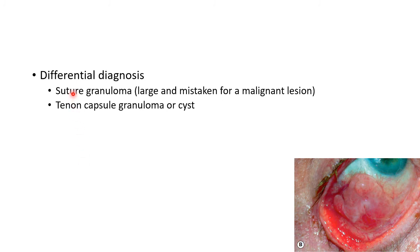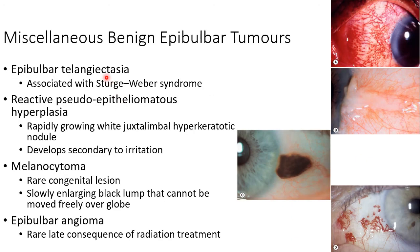The differential diagnosis of pyogenic granuloma includes suture granuloma, which is large and usually mistaken for a malignant lesion. Other differentials include Tenon's capsule granuloma or Tenon's capsule cyst.